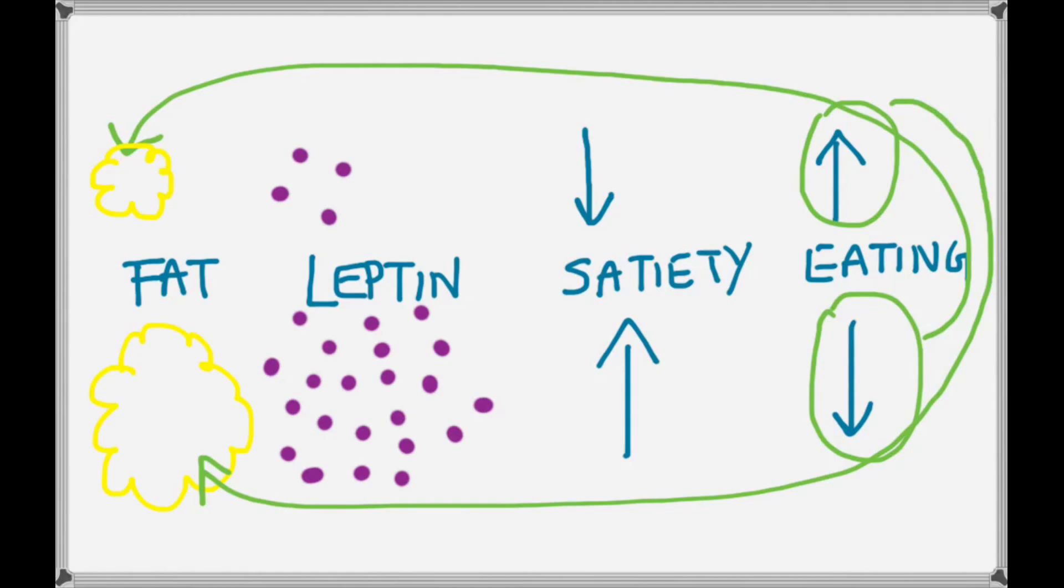So leptin turns out to be a really important regulator, keeping fat levels in a relatively narrow range. Because as soon as fat levels begin to come down, the signal is to eat more, and that results in fat levels coming back up, which results in a signal to eat less, bringing the fat levels back down. So under normal circumstances, fat levels are maintained in a pretty narrow range thanks to the activity of leptin.